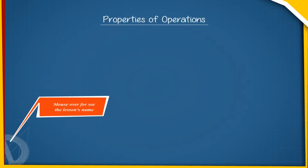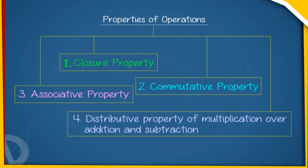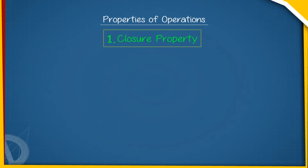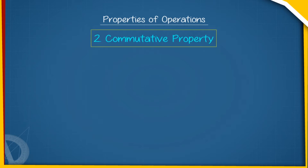Properties of Operations: There are different properties of operations for rational numbers. 1. Closure Property: For rational numbers X and Y, X plus Y, X minus Y, X multiplied by Y, and X divided by Y will also be rational numbers. 2. Commutative Property: For rational numbers X and Y, X plus Y equals Y plus X, and X multiplied by Y equals Y multiplied by X.